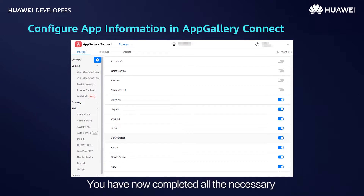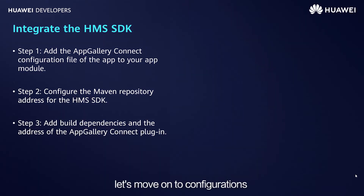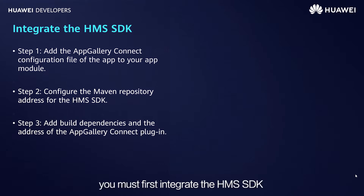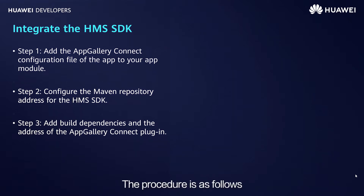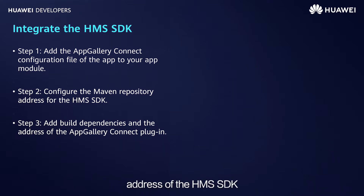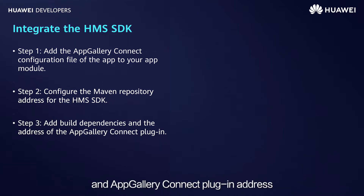You have now completed all the necessary configurations in AppGallery Connect. Next, let's move on to configurations in Android Studio. We provide the HMS SDK for integration through Maven repositories. Before getting started, you must first integrate the HMS SDK into Android Studio. The procedure is as follows: add the app configuration file from AppGallery Connect to Android Studio; configure the Maven repository address of the HMS SDK; and add the build dependencies and AppGallery Connect plugin address.